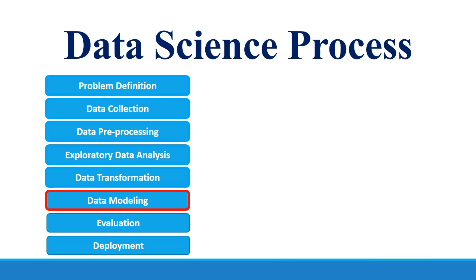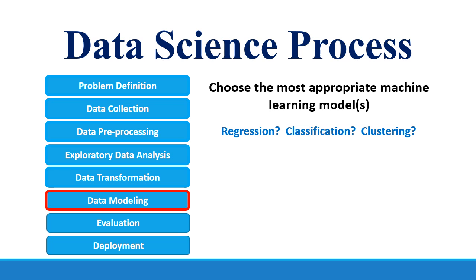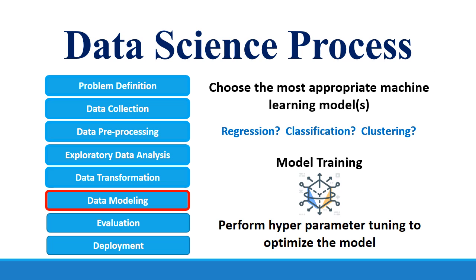So now your data is ready to be fed into a machine learning model. The first step is to choose the machine learning model that is most appropriate for your data — it could be a regression, classification, or a clustering model. We will learn more about these terms in the coming videos. Once you decide the model, the next step is to train the model using the training data. During the training, we use different parameters to test and optimize the performance of the model. This is called hyperparameter tuning.